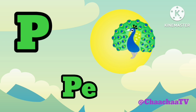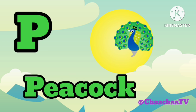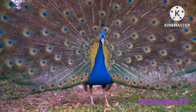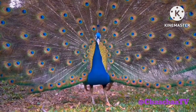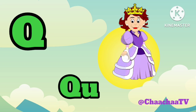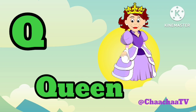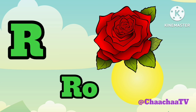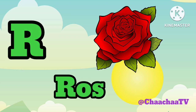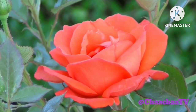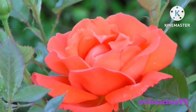P. P for Peacock. P-E-A-C-O-C-K. Peacock means Moor. Q. Q for Queen. Q-U-E-E-N. Queen means Rani. R. R for Rose. R-O-S-E. Rose means Gulab.